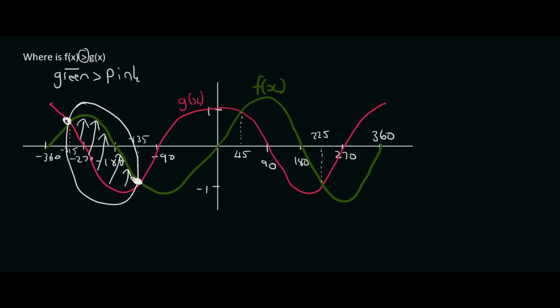Then at this point, they switch over, so now the green graph is underneath the pink graph. The first interval where the green graph is higher is from minus 315 degrees. So we can say x is an element between minus 315 up to minus 135 degrees. That's when the green graph was on top.